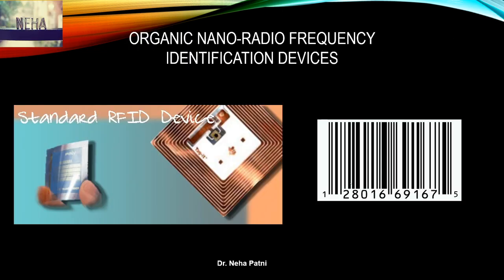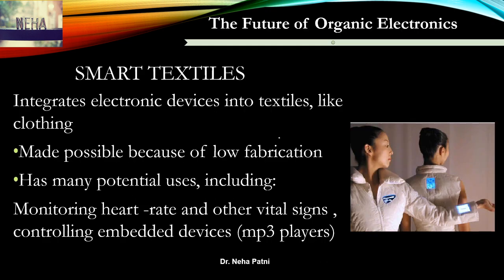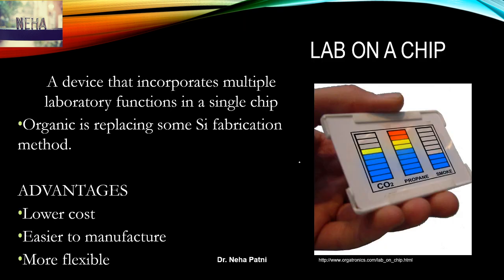You also have electronic papers as an application. Coming to the next application: RFID devices. Standard RFID devices look a certain way, but organic RFID devices offer the potential for quicker checkout and reduced waste. There are also smart textiles, where electronic devices are integrated into fabric at low fabrication cost, allowing monitoring of many vital signs of the body — a very interesting application.